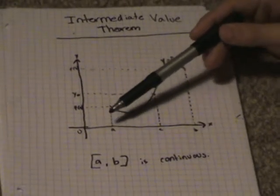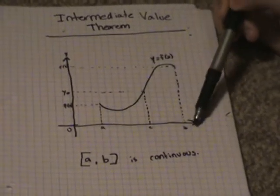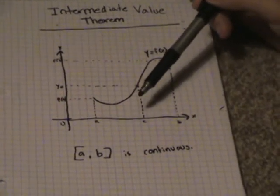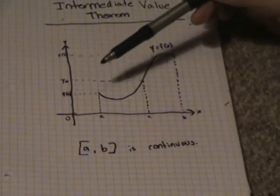definition was easier for you to understand - if a and b are a closed interval and they're continuous, there's a point c between them. There will be every single value between f(a) and f(b).